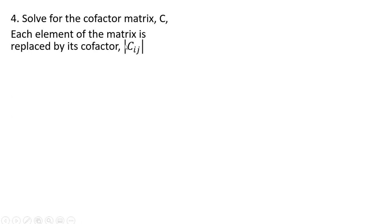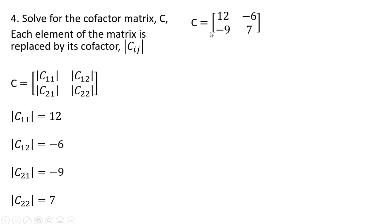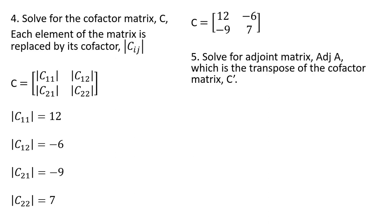Now we solve for the cofactor matrix, where each element of the matrix is replaced by its cofactor. We plug in the results from the previous step to get our cofactor matrix. The next step is to solve for the adjoint matrix, which is simply the transpose of the cofactor matrix — rows become columns, columns become rows. So we transpose the cofactor matrix to get the adjoint matrix.